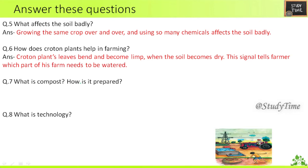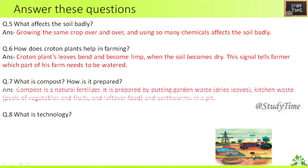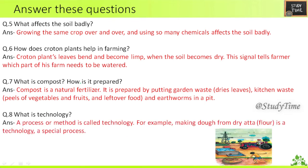Seventh question — what is compost and how is it prepared? Compost is a natural fertilizer. It is prepared by putting garden waste, dry leaves, kitchen waste, and earthworms in a pit. Eighth question — what is technology? A process or method is called technology. For example, making dough from dry flour is a technology — a special process.